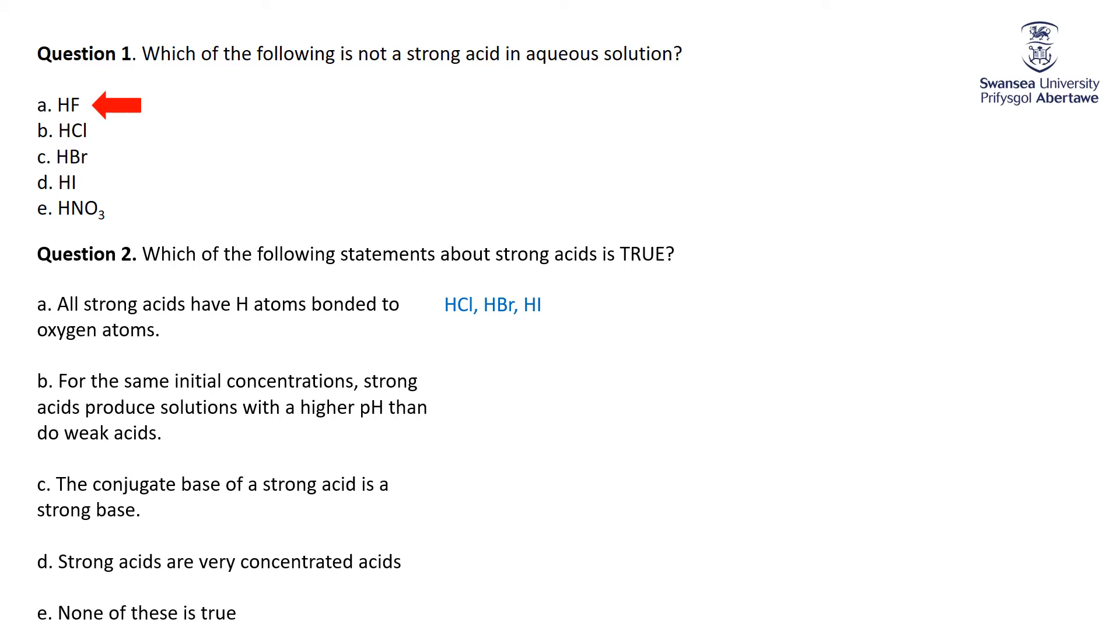Well, of course, strong acids completely dissociate, so they have a higher H-plus concentration than the weak acids, which only partially dissociate. But pH is inversely related to H-plus, so therefore higher H-plus, lower pH.